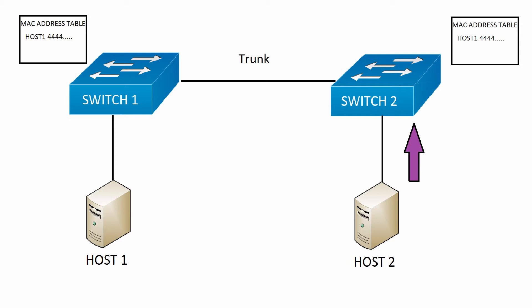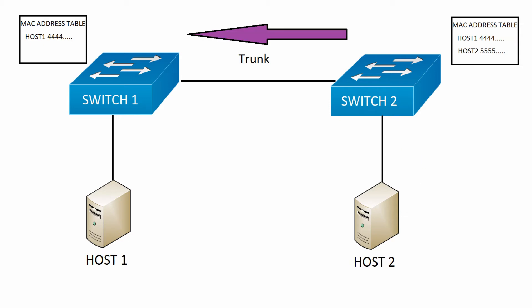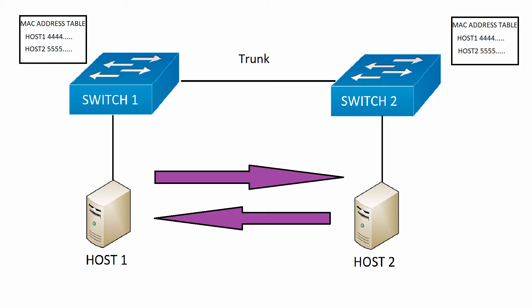The frame comes back into switch 2, which then places the source MAC address of host 2 into its MAC address table and forwards that on to switch 1. Switch 1 receives the reply and places the source MAC address of host 2 into its MAC address table. It can now forward the frame that host 1 initially sent. That's an example of how two hosts speak to each other in the same VLAN.